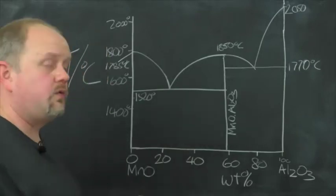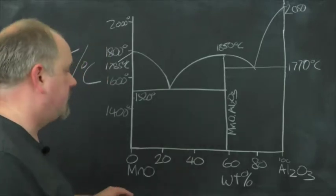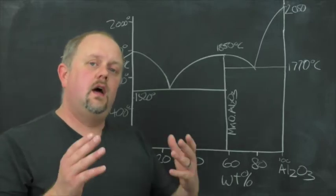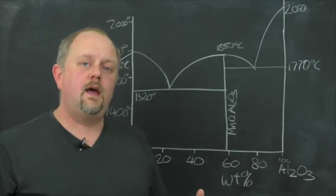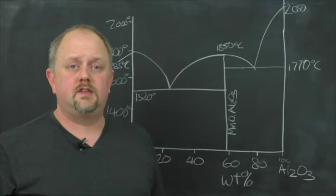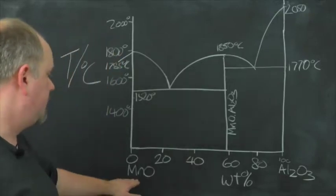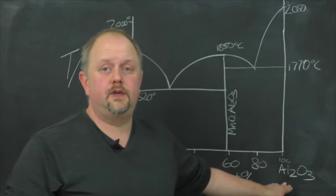Firstly, we've got to define what the system is and what our components are. So for this exercise, I'm going to be using the example of the MnO-Al2O3 system. So our components are MnO and Al2O3.